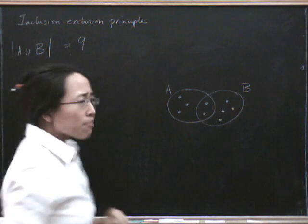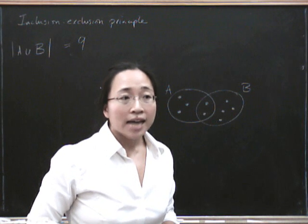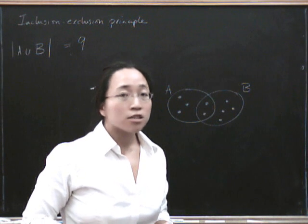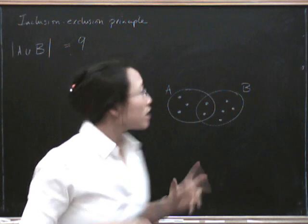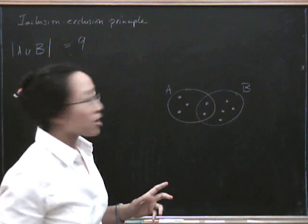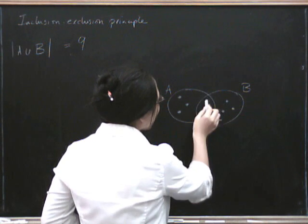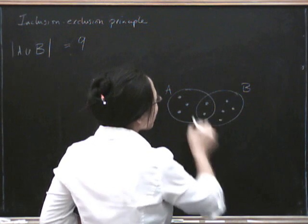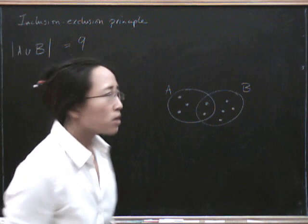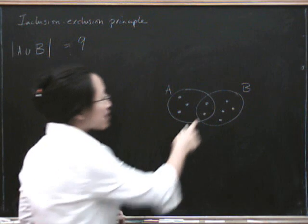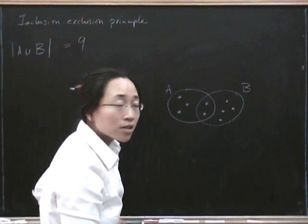Now how does that compare with the number of elements in A and the number of elements in B? Do I just add them up? Well, no — I clearly don't just add them up. Because if I added up all the elements in A and all the elements in B, what would I have done wrong? Well, I'd have counted the elements in the intersection too many times.